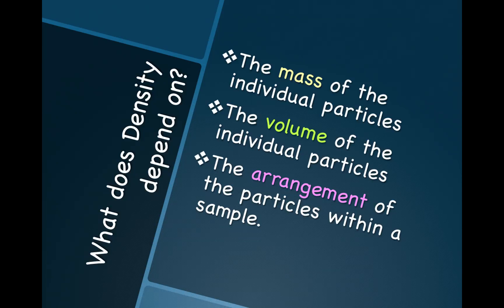What does density depend on? Density depends on the mass of the individual particles that make up the sample of matter, the volume of the individual particles that make up the sample, and the arrangement of the particles within the sample.